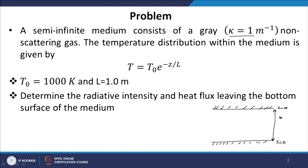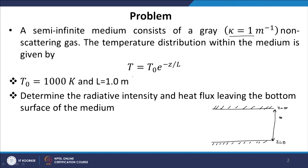We have gone one step further in simplification. In the previous lecture, we made certain simplifications that the plates are infinite in x and y direction. Now we have made one more simplification: it is semi-infinite, extending to infinity. The purpose of doing this is that any radiation from the top plate cannot reach the plate at z = 0. There is a temperature distribution: T = T₀ e^(−z/L), where T₀ is 1000 Kelvin, meaning temperature is decreasing as we move away from the plate. The plates themselves are cold and black, meaning the plates do not emit any radiation.